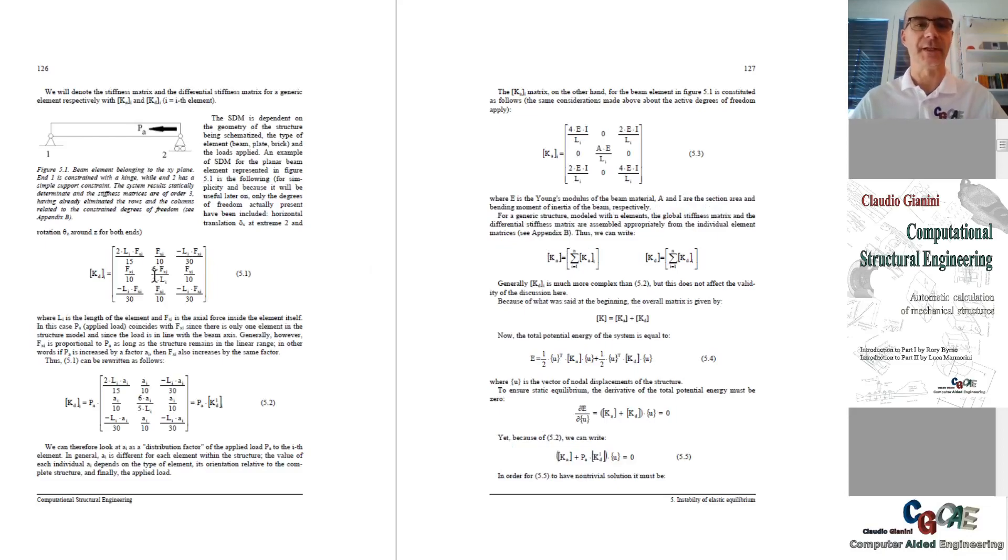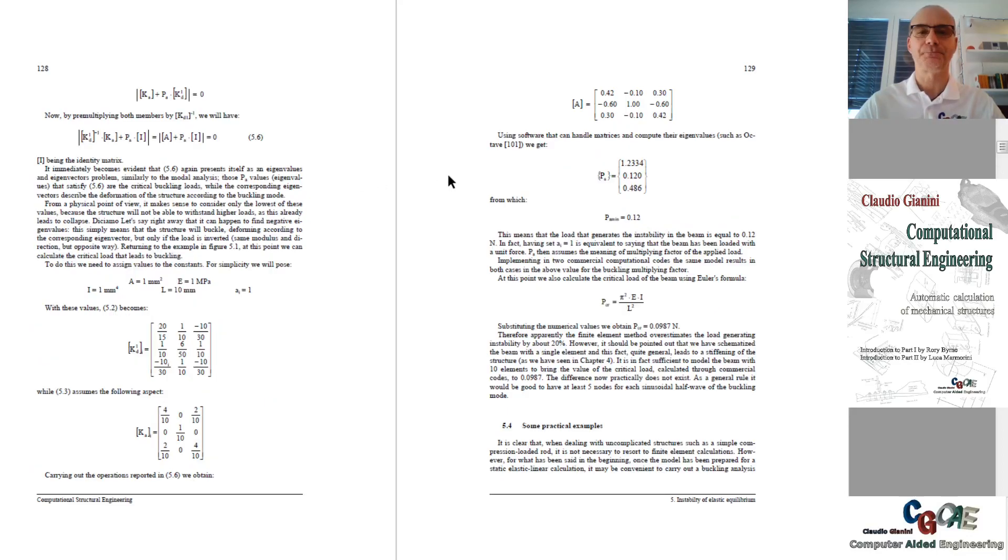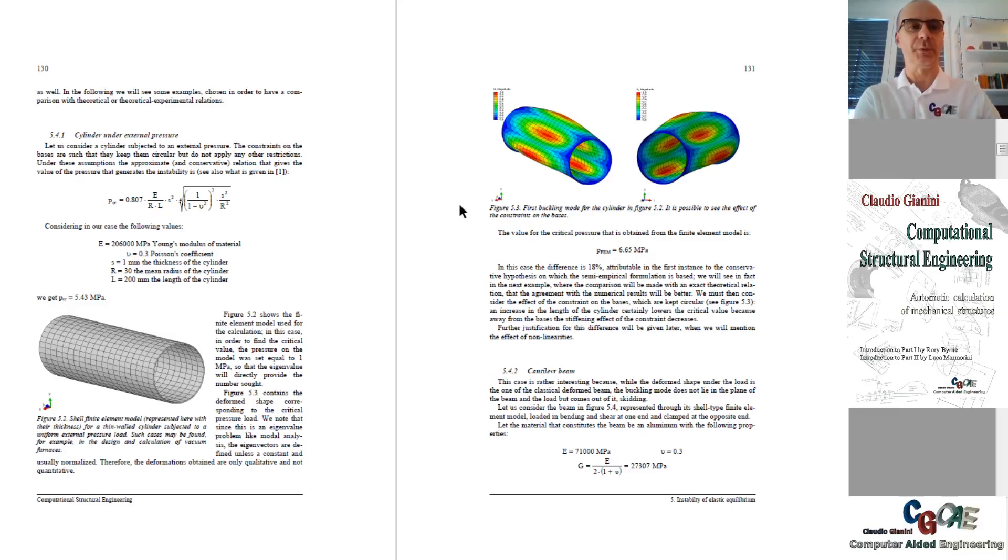In this case, some small theory is given on how a finite element could proceed to calculate the critical loads. This is done using a simple beam example. Then some practical examples are given, like the case of thin cylinders, infinitely long, which is not exactly infinitely long but long enough to get results which are very close to the ones given in some structural handbooks. Here we see the deformed shape of the first mode.